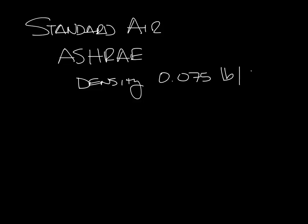Standard air is defined by ASHRAE as having a density of 0.075 pounds per cubic foot, a barometric pressure of 29.92 inches of mercury at sea level, and a 70 degree dry bulb temperature.